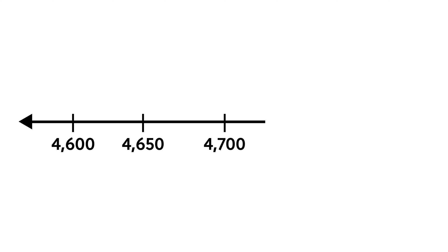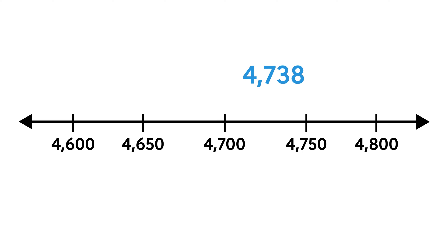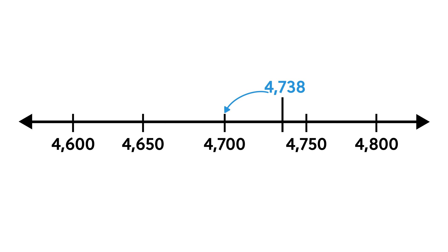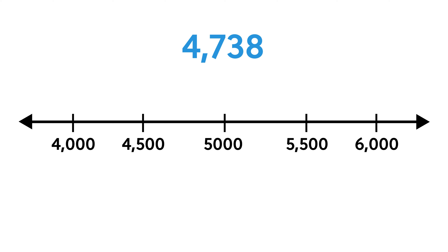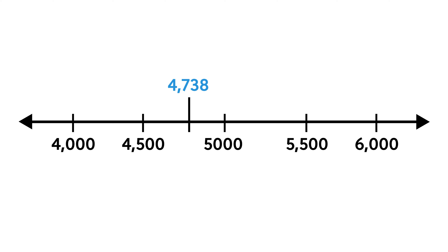Let's put the previous examples on number lines to help us visualize how rounding works. We rounded 4,738 to the nearest hundred and got 4,700. If we plot 4,738 on a number line marked off by hundreds, it is closer to 4,700 than it is to 4,800. When we rounded 4,738 to the nearest thousand and got 5,000, we can see on a number line marked off by thousands that it is closer to 5,000 than to 4,000.